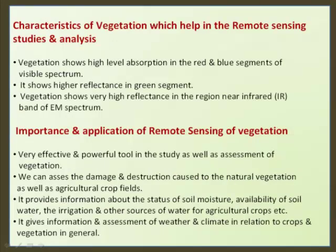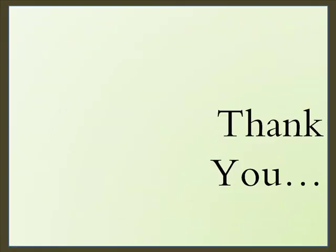Vegetation characteristics helpful in remote sensing include high absorption in the red and blue segments of the visible spectrum, higher reflectance in the green segment, and very high reflectance in the near infrared band of the electromagnetic spectrum. Remote sensing of vegetation is a very effective and powerful tool for assessment of vegetation and agricultural crops. It provides information about soil moisture, availability of soil water, irrigation, and other water sources for crops, as well as weather and climate in relation to crops and vegetation.